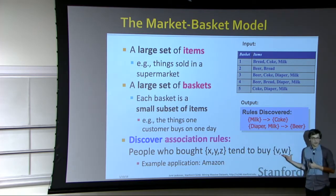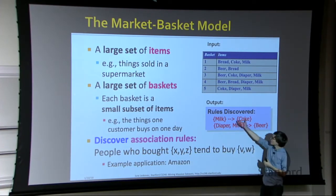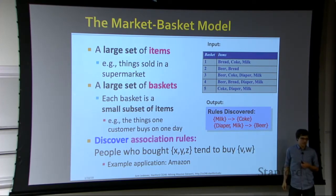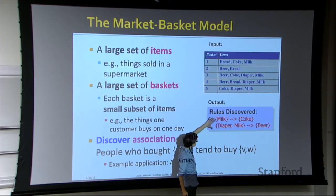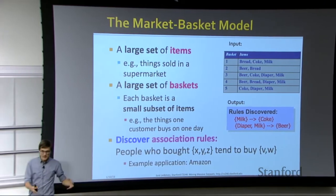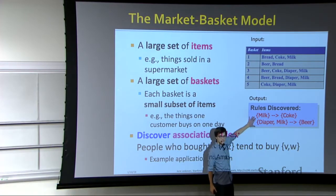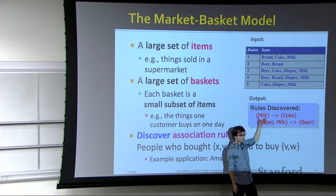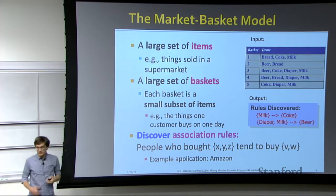Here is an example of five different baskets, each containing a different set of items. From this I could discover association rules: people who buy milk also tend to buy Coke, or people who buy diapers and milk tend to buy beer as well. Given the baskets, I want to figure out what tends to be bought together. You can think of association rules as predictors: given that you bought milk, I predict you will buy Coke as well.